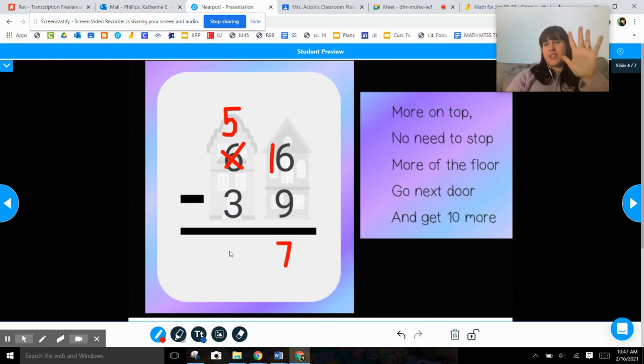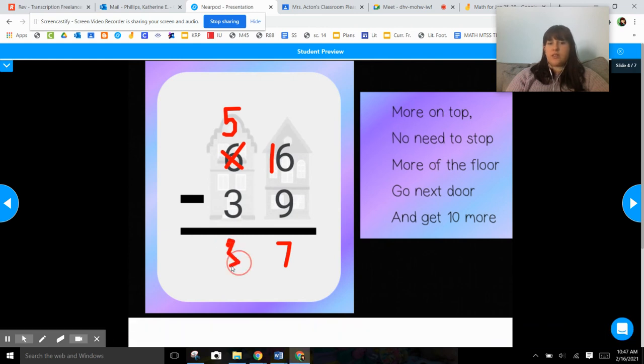And then 5 minus 3 is 2. And that one's as easy as you can do with your hands. 5 minus 2 is 1, 2, 3. So then your answer is 37.